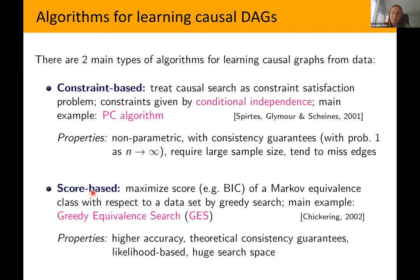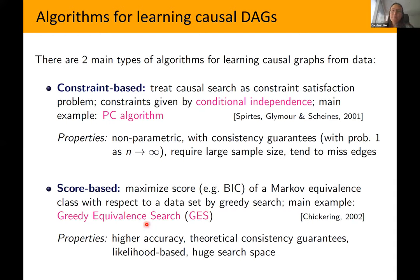The next question, once we know what we can identify, is: can we come up with algorithms that take in observational and interventional data and output the interventional Markov equivalence class? For just causal structure discovery from observational data — without latent variables — there are two classes of algorithms: constraint-based and score-based. Constraint-based approaches treat causal structure discovery as a constraint satisfaction problem, finding the causal graph satisfying as many conditional independence relation constraints as possible. The most well-known example is the PC algorithm.